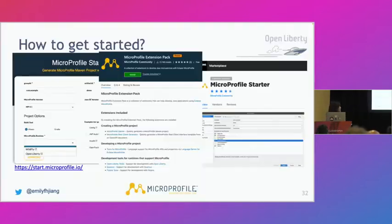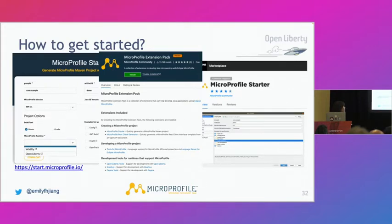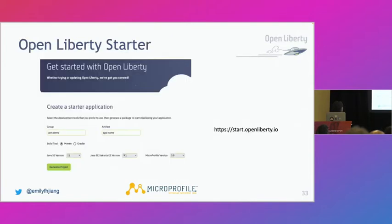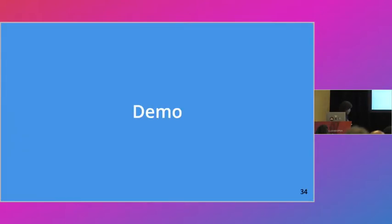To get started creating MicroProfile applications, you can go to start.microprofile.io, or use VS Code with the MicroProfile Extension Pack, or use IntelliJ. If you use OpenLiberty, there is also the OpenLiberty starter at which you can directly create a MicroProfile application running on Liberty. Let me start the demo now — I'll go directly to VS Code.